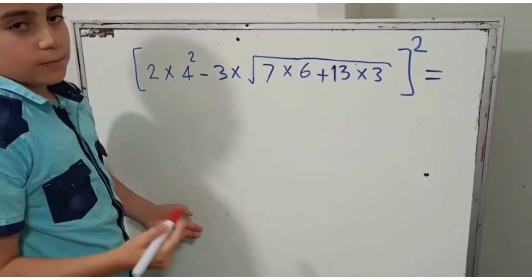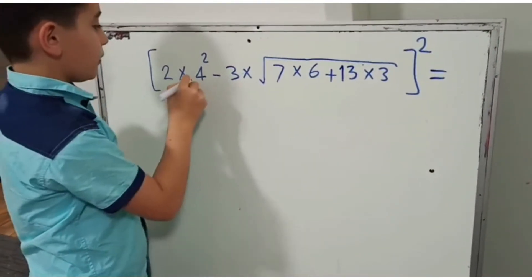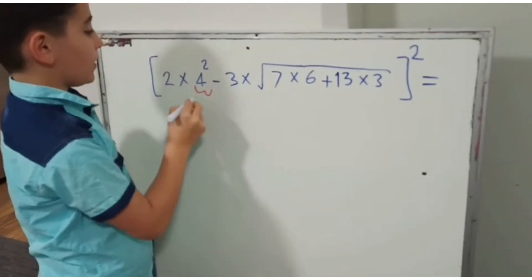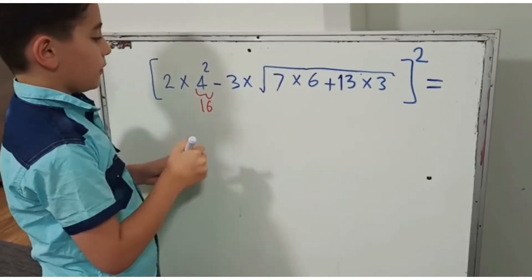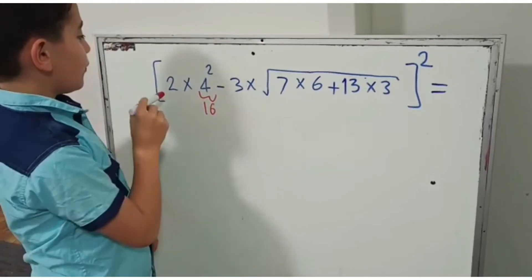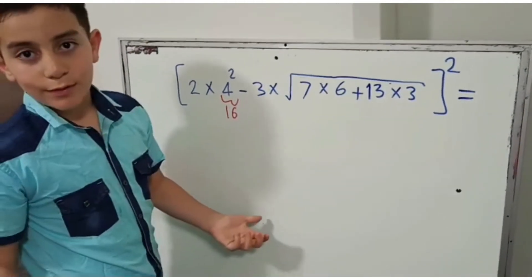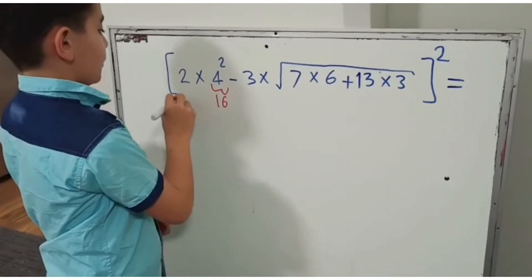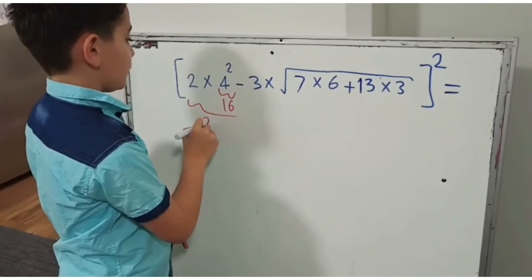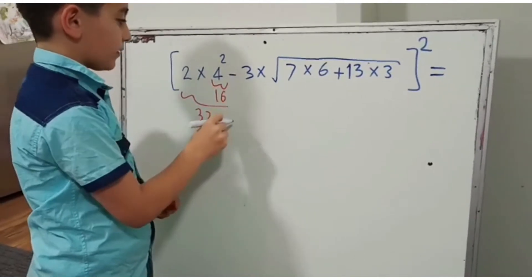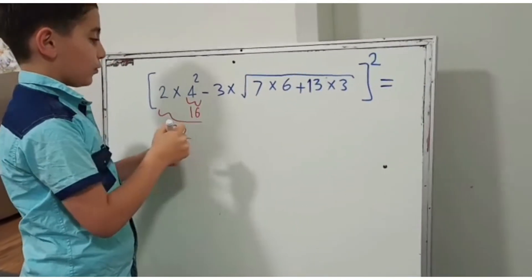4 squared, which means 4 times 4, so 4 times 4 is 16. Now we need to do 2 times 16 which equals 32. So for this part now is 32.